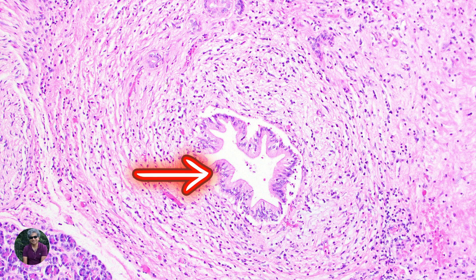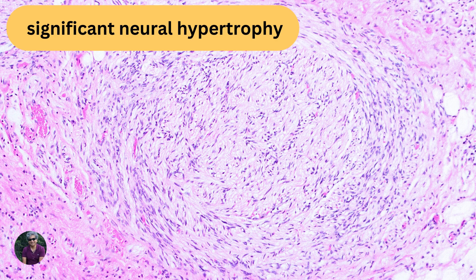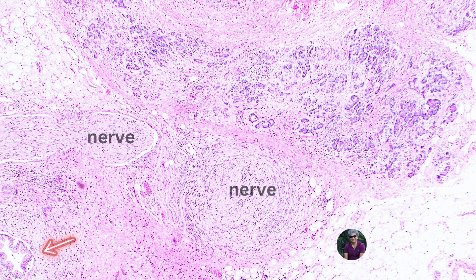Here's another focus — a benign-looking gland with a nerve around it. This does look very much like perineural invasion, doesn't it? There's the offending gland, there's the nerve around it. But notice there are many other nerve twigs around that focus — there is very significant neural hypertrophy here. These hypertrophic nerves were distributed throughout the pancreas. My hypothesis is that the sheer volume of neural proliferation causes that gland to get stuck within that neural proliferation, mimicking perineural invasion.